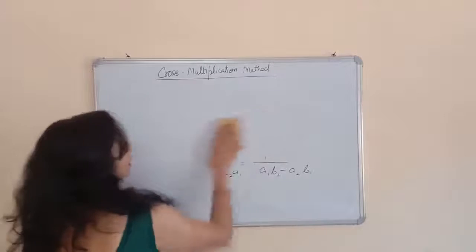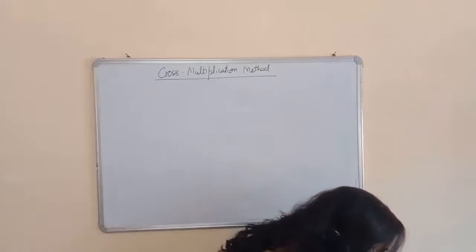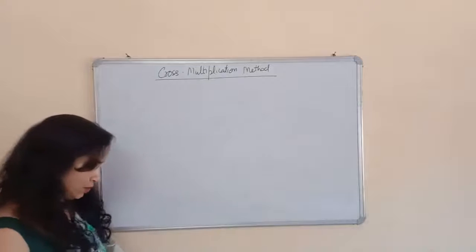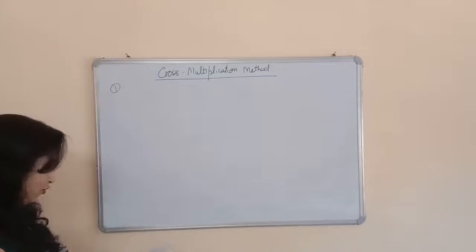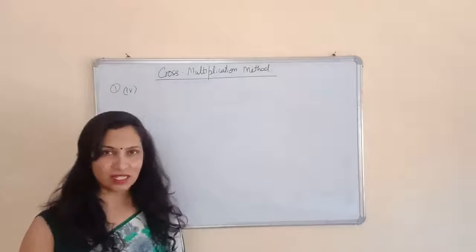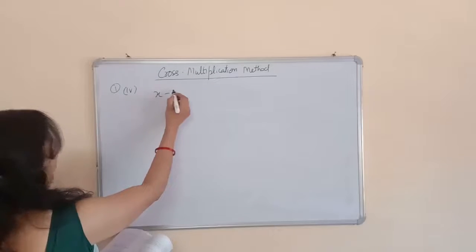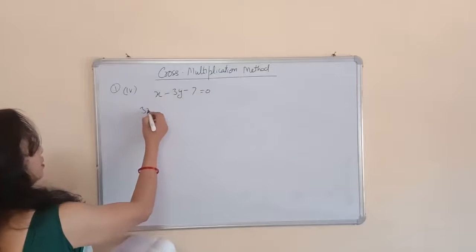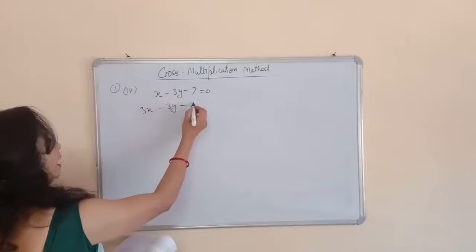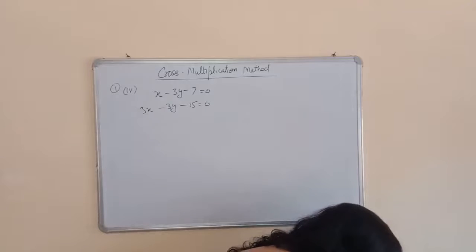This is Exercise 3.5 of your NCERT textbook. I am taking one example from this exercise — Question 1, Part 4. The method for solving all the parts is the same, so if you have any problem you can ask me in the Zoom class. The equations are: x minus 3y minus 7 = 0, and 3x minus 3y minus 15 = 0. You have to solve them using the cross multiplication method.